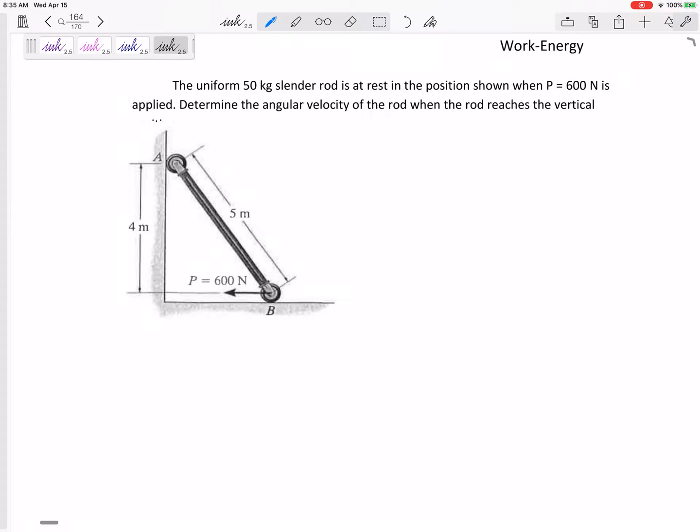All right, let's look at this one. We've got a uniform 50 kilogram slender rod at rest in the position shown. This force of 600 newtons is applied to determine the angular velocity of the rod when the rod reaches vertical. So it starts right here, it ends right here. It's very important that you can visualize where it starts and where it ends because some of these might draw it at a starting position or in between. Make sure to clarify, it's starting right here, ending right here.